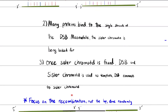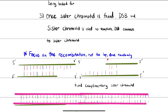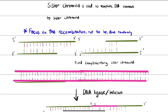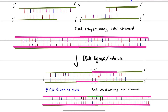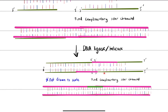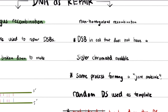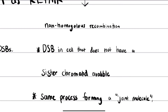The double strand break connects with the sister chromatid. DNA ligase and helicase cut open and unbind the sister chromatid. What essentially happens is an exchange of nucleotides — the sister chromatid helps in the formation of the broken double strand, repairing it using the complementary sequence as a guide.